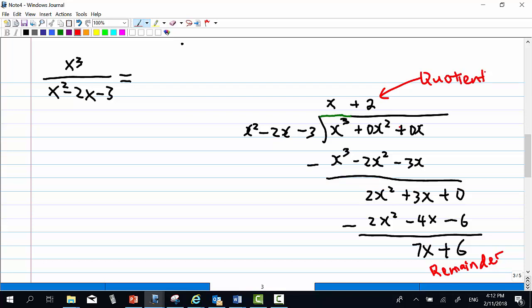So the improper fraction can be written as x plus 2 as a quotient plus remainder 7x plus 6 over x square minus 2x minus 3. Now x square minus 2x minus 3 can be factorized, which we want to do partial fraction later on. So let's factorize this. This is equal to x minus 3 times x plus 1.